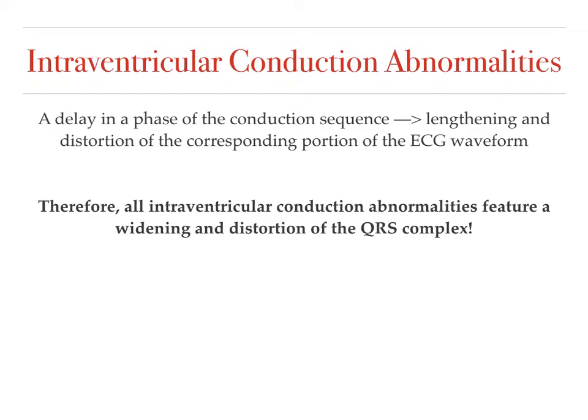What are intraventricular conduction abnormalities? Basically this is a delay in the phase of the conduction sequence, and this causes a lengthening and distortion of the corresponding portion of the EKG waveform. Therefore, in any intraventricular conduction abnormality, you will have a widening and distortion of the QRS complex.